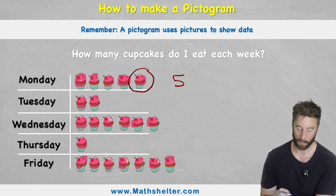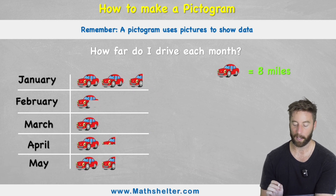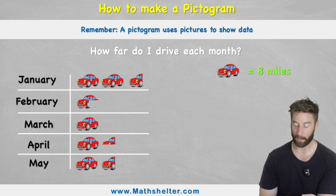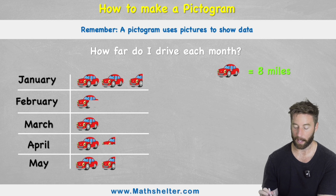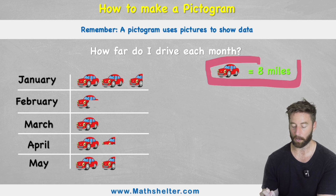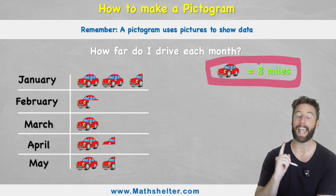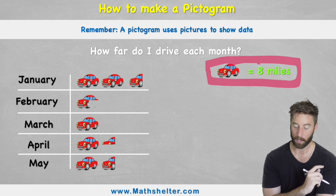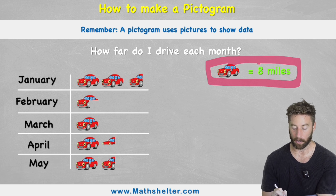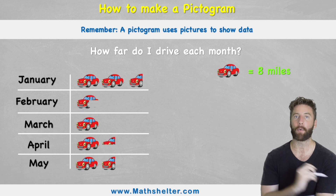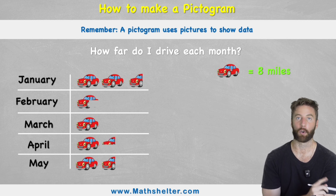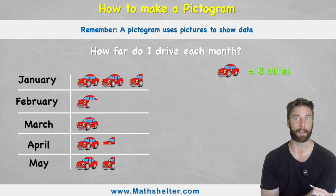For example, if we look at this chart here — how far do I drive each month? We can see we have January, February, March, April and May. But if we look over here we can see that one picture of a car equals eight miles. And we can see that some of the cars are only in halves, some are in quarters, some are in three quarters. So now we've got a little bit of maths to do in order to calculate the amount.